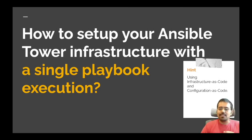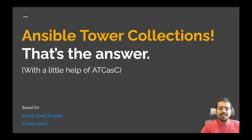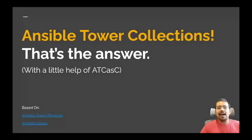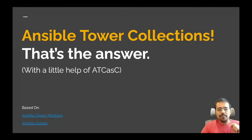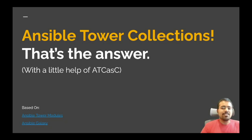With ATCASC — with configuration as code — you use all of this automation to set up and configure your Ansible Tower using a single Ansible execution. You can have an Ansible playbook that executes against Ansible Tower, sets it up, creates a new instance in AWS, configures it, installs Ansible Tower, and makes it ready to use — all with a single Ansible playbook. Ansible Tower, which is a superset of Ansible, can be set up using Ansible itself. Ansible Tower Collections are the answer that makes this possible.